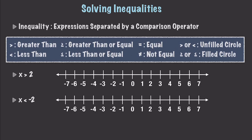If we were to graph an inequality on a number line — for example, where we have x is greater than 2 — in situations where we are using greater than or less than, we're going to use an unfilled circle. We find the 2 on the number line, draw a circle there, and then fill in the line in the direction of x.